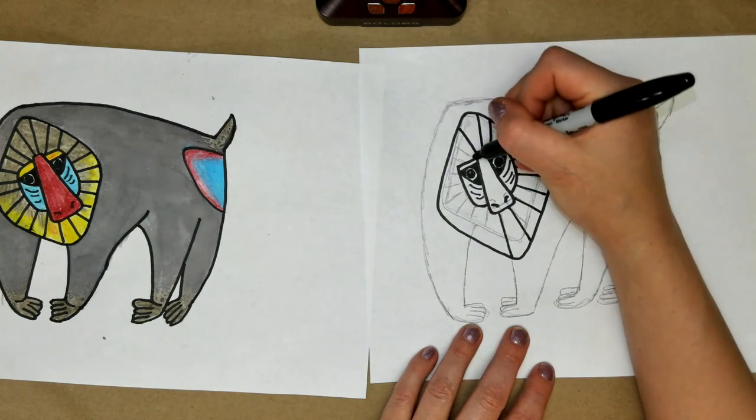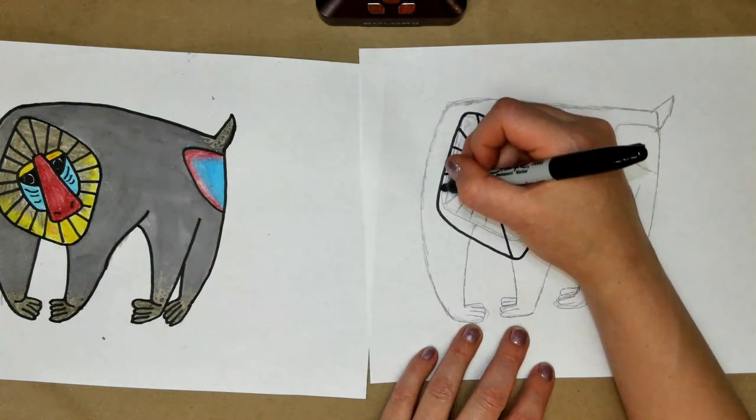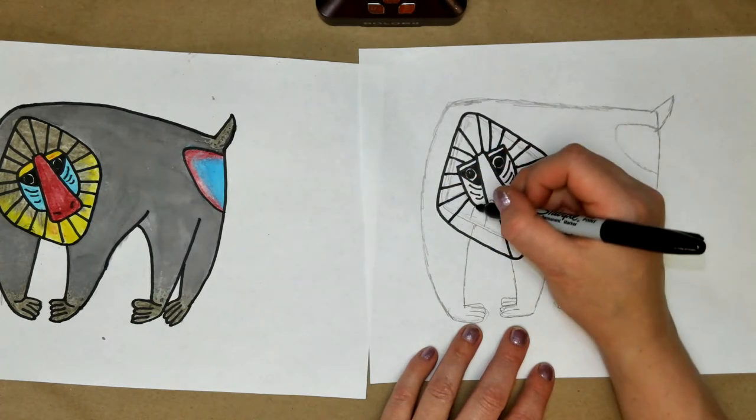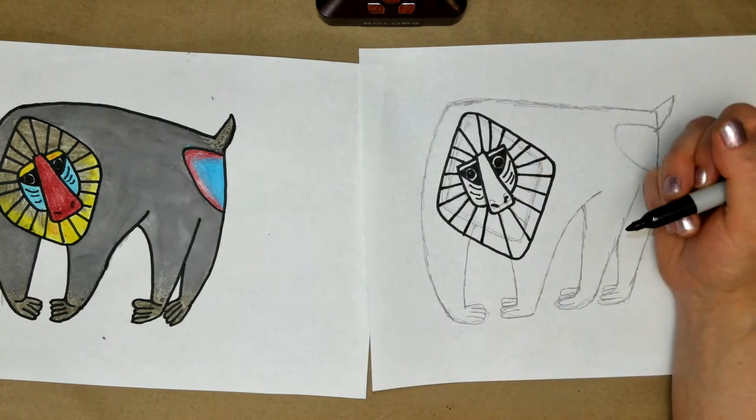Now I don't know if you've ever seen the Lion King, but the monkey or mandrill who is in charge of showing off Simba when he's born is a mandrill. That's what he is. Rafiki.